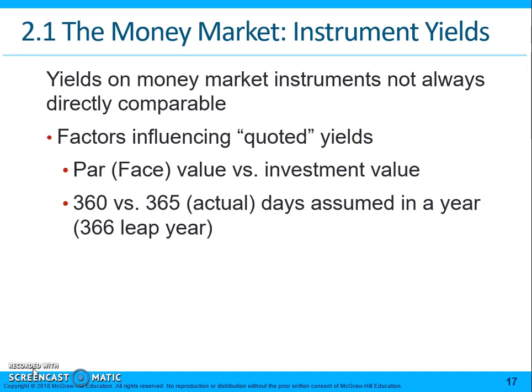The bank discount pricing for a treasury bill uses an actual 360-day basis. There are other instruments that use this method, but the bank discount rate actually understates the yield on that security. Some instruments also use simple versus compound interest.